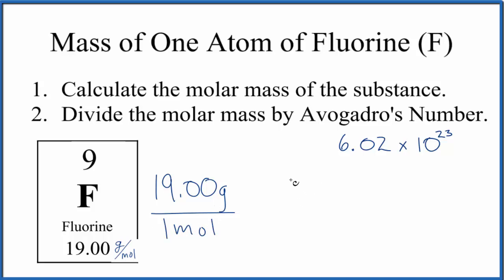Then we can multiply this by a conversion factor. We know that one mole of any substance has Avogadro's number. So in essence, really all we are doing is we're just dividing 19, this average atomic mass, by Avogadro's number.